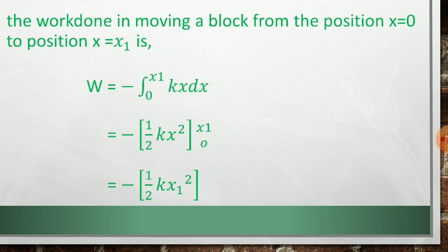Now the work done in moving a block from the position x is equal to 0 to position x is equal to x1 is obtained by integrating above equation between the limit 0 to x1. Therefore, the work done W is equal to minus integration 0 to x1 kx dx is equal to minus 1 half kx square, where x square by 2 is integration of x dx between the limit 0 to x1. So first, we have to put the upper limit. Therefore, it is equal to minus 1 half kx1 square. Now by putting lower limit 0, then second term reduces to 0.